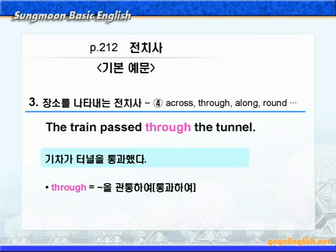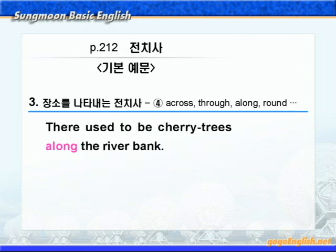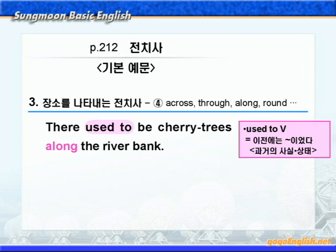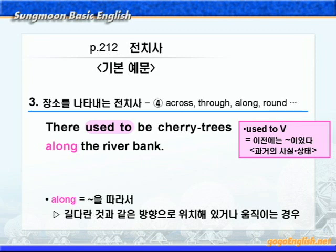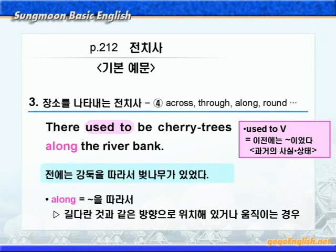계속해서 전치사 along을 살펴보죠. used to 부정사는 '이전에는 뭐뭐이었다'는 과거의 사실 혹은 상태를 나타냅니다. along은 '뭐뭐를 따라서'라는 뜻으로, 길다란 것과 같은 방향으로 위치해 있거나 움직일 때 쓰는 전치사입니다. territory는 '번나무'라는 뜻이니까, '전에는 강둑을 따라서 번나무가 있었다'가 됩니다.